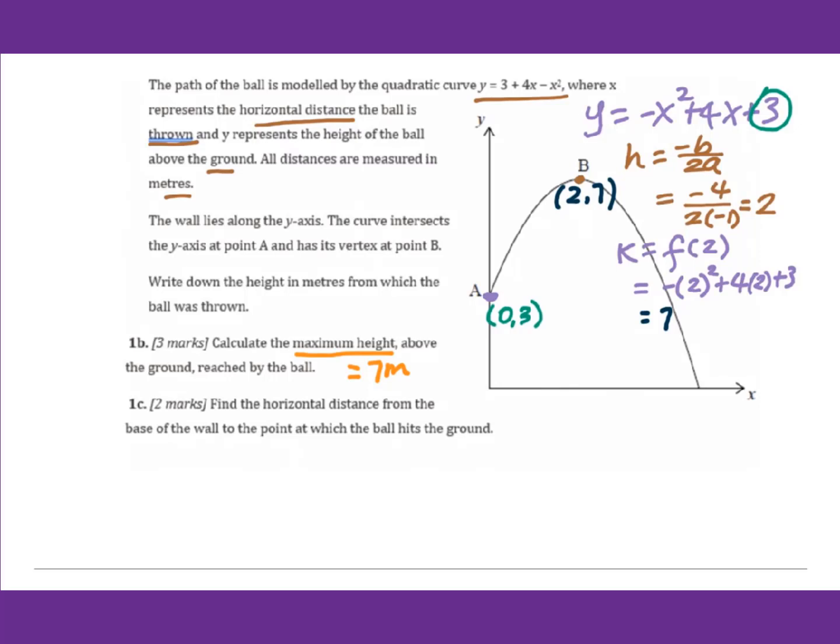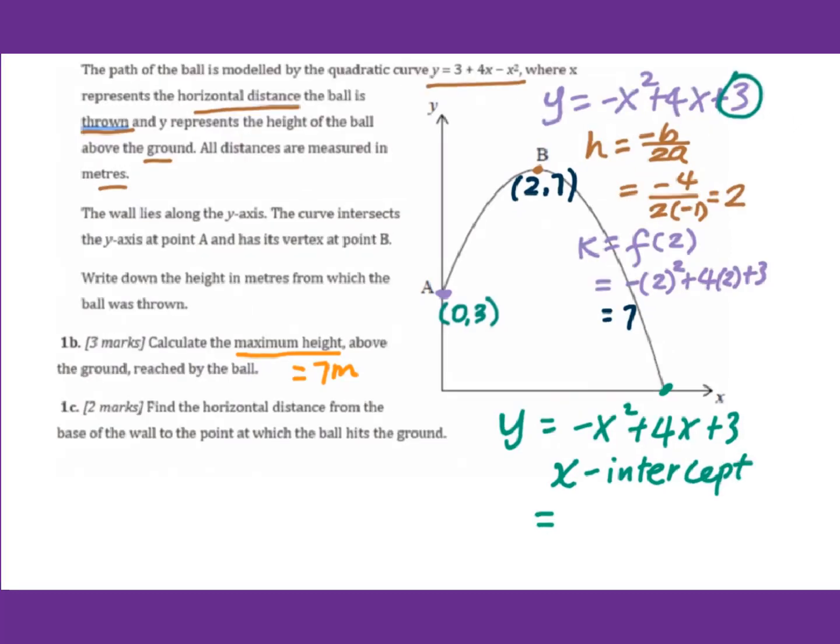For 1c, find the horizontal distance from the base of the wall to the point at which the ball hits the ground. We are looking for this x-intercept. So we put y equals negative x squared plus 4x plus 3 into graphing calculator. x-intercept equals 4.65 meters.